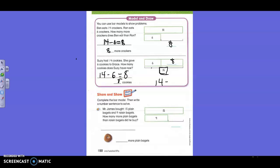We're going to do share and show together real quick. Complete the bar model, then write the number sentence to solve. So, we have to do two things. We have to complete this bar model. We have to write the number sentence and then write the answer down here. Let's read it, boys and girls. Mr. James bought 15 plain bagels and nine raisin bagels. How many more plain bagels than raisin bagels did he buy?